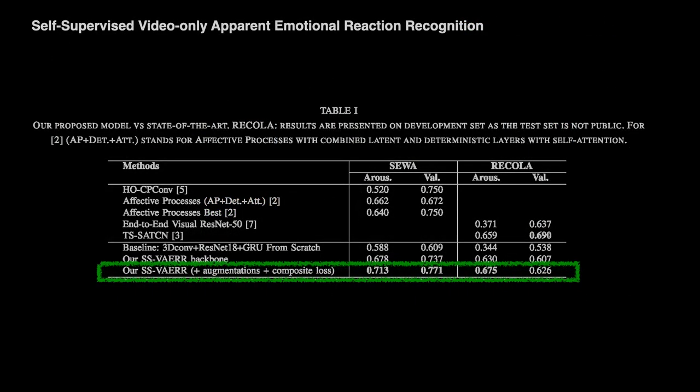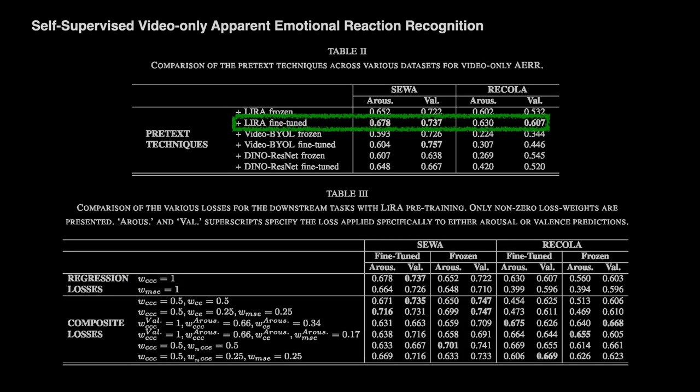Finally, there are some numeric results. This is a comparison with other competitors — our model is best on SIVA and best for arousal on Recola, and slightly worse than one other publication on valence for Recola. We also provide justification for why we use Lyra as the pretext model — it performs best across the board compared to BIEL and DINO. We also do a study on composite losses and which are better for different datasets. We conclude they are rather data-dependent; however, we propose a composite loss that performs reasonably well on both SIVA and Recola.